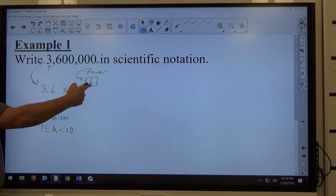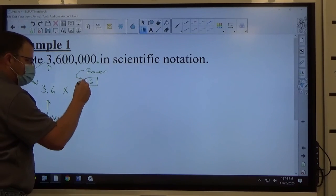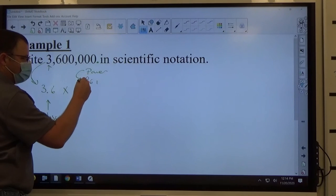This gets smaller, this is positive. And that's the answer, 3.6 times 10 to the sixth. That is our task in a problem of this variety to write something in scientific notation.